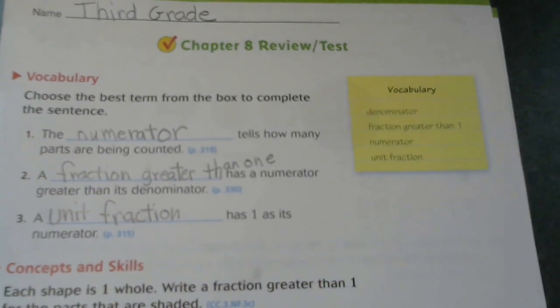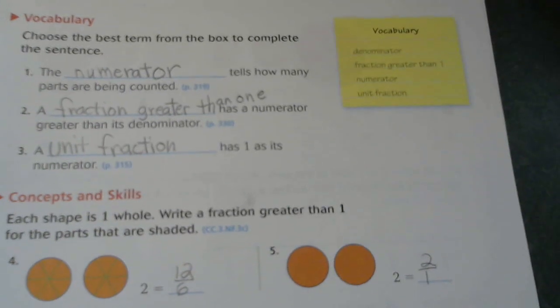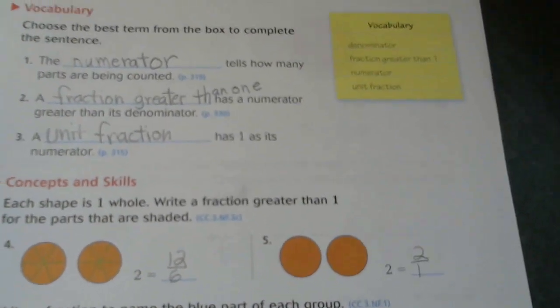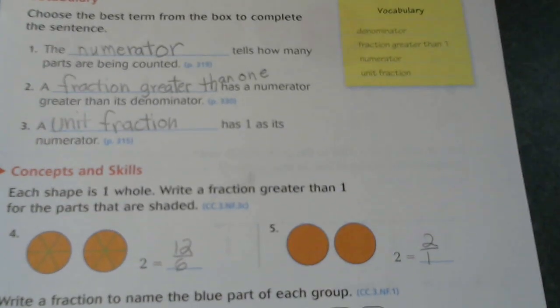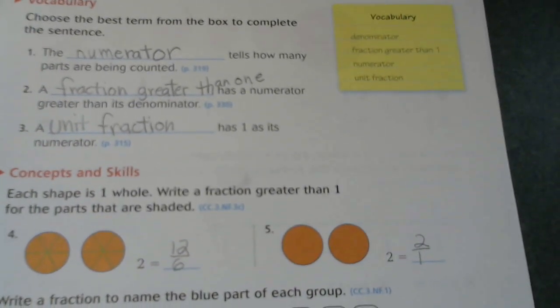It says choose the best term from the box to complete the sentence. The blank tells how many parts are being counted. Not how many parts the whole is separated into, just how many parts you're counting, and that would be numerator, the top number.